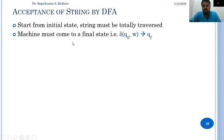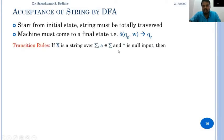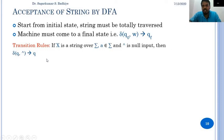For showing acceptance of a string by deterministic finite automata, some transition rules are used. Considering x be a string over sigma, where a belongs to sigma and epsilon is a null input, then a transition delta of q on epsilon gives q. This means that on any null input on any state q, the automata stays in the same state.